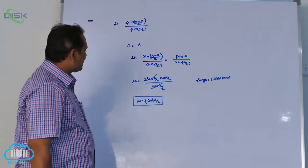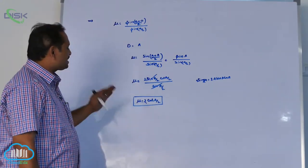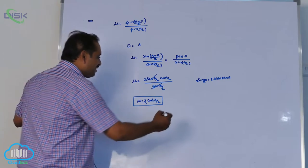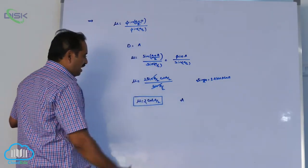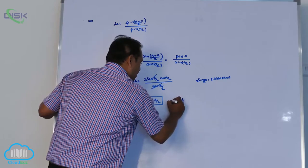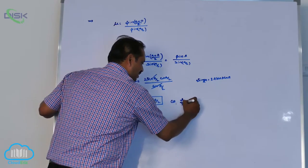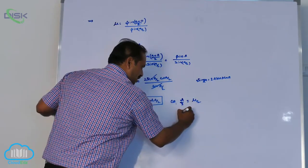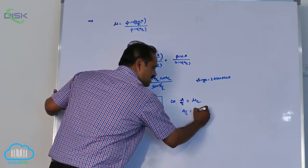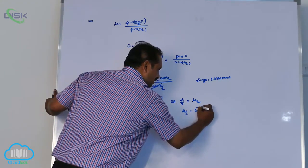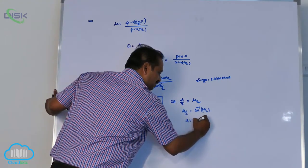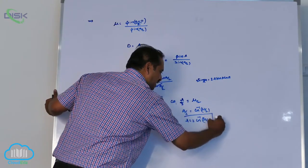Sometimes they ask us angle of the prism in terms of refractive index like M-SET exam. A by 2 equals, cos a by 2 equals mu by 2. A by 2 equals cos inverse of mu by 2. That is a equals 2 into cos inverse mu by 2. Very important thing.